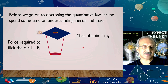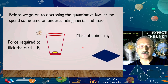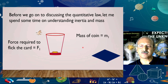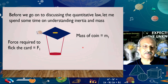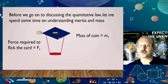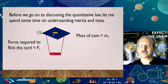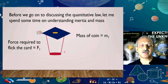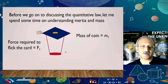Let's look at an animation of this. We flick the card and the card went off flying, but the coin fell into the tumbler. What we notice is: we have set the card into motion, but the coin remains at rest. Since there is no support — the object it was resting on has moved away — it falls into the tumbler.